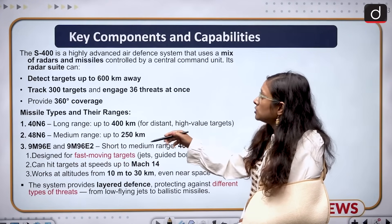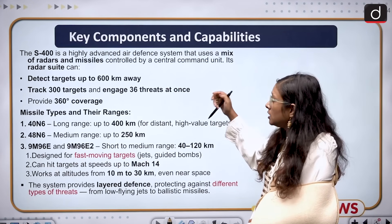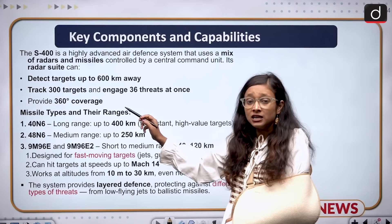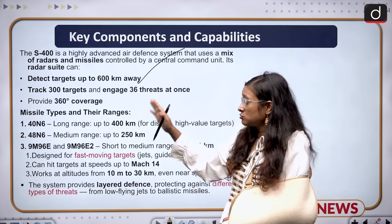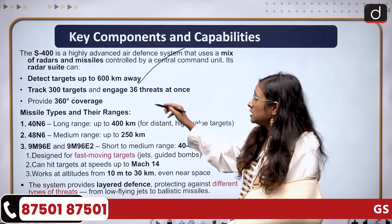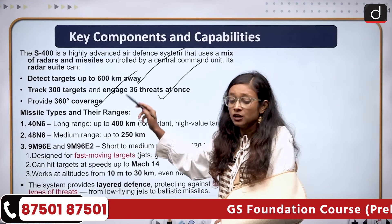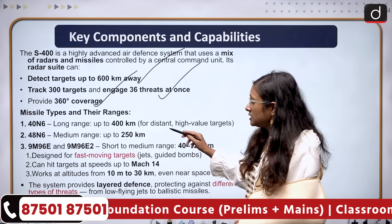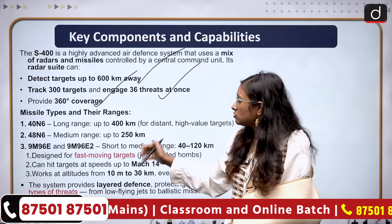Looking at the key components: it is a highly advanced air defense system with a surface-to-air capability. It can detect targets 600 kilometers away. It can track 300 targets simultaneously, engage 36 threats at once, and provide 360-degree coverage — meaning nothing can escape from this system.